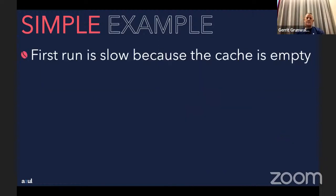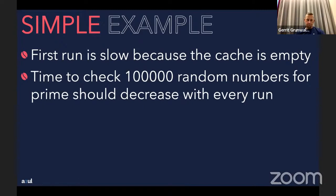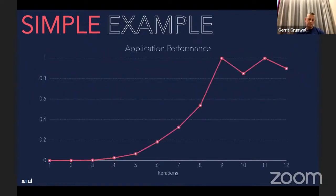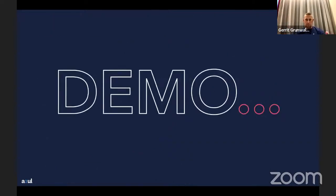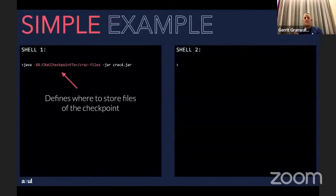The first run is quite slow because the cache is empty — every call must be checked and calculated. With each run the time decreases as the cache fills up, simulating the JVM warm-up I mentioned earlier. Measurements show it starts very slow, then gets faster and faster with each iteration until it levels out at around 1 — the optimum performance reachable. The demo uses two terminal windows, which I'll show live after the presentation.